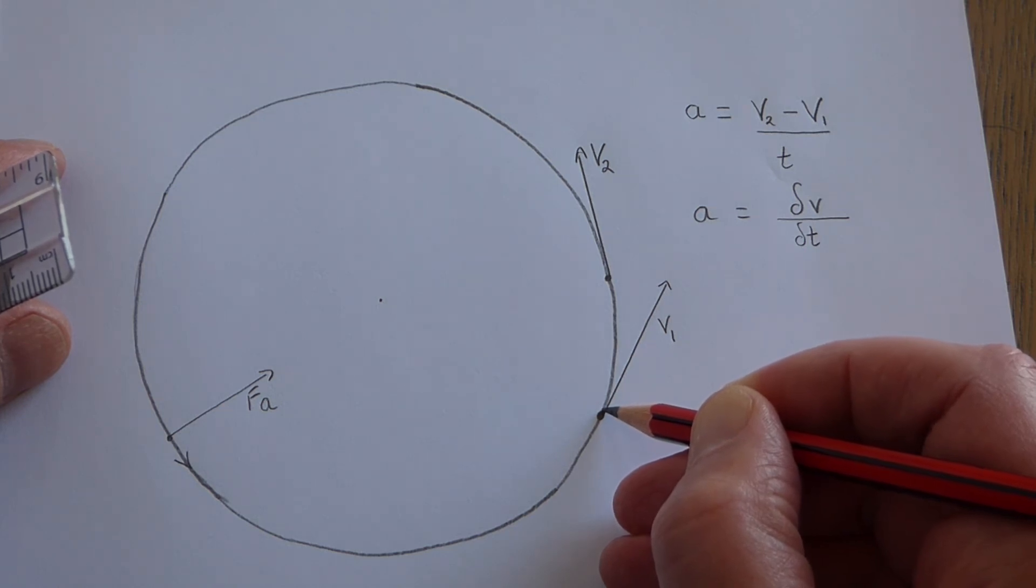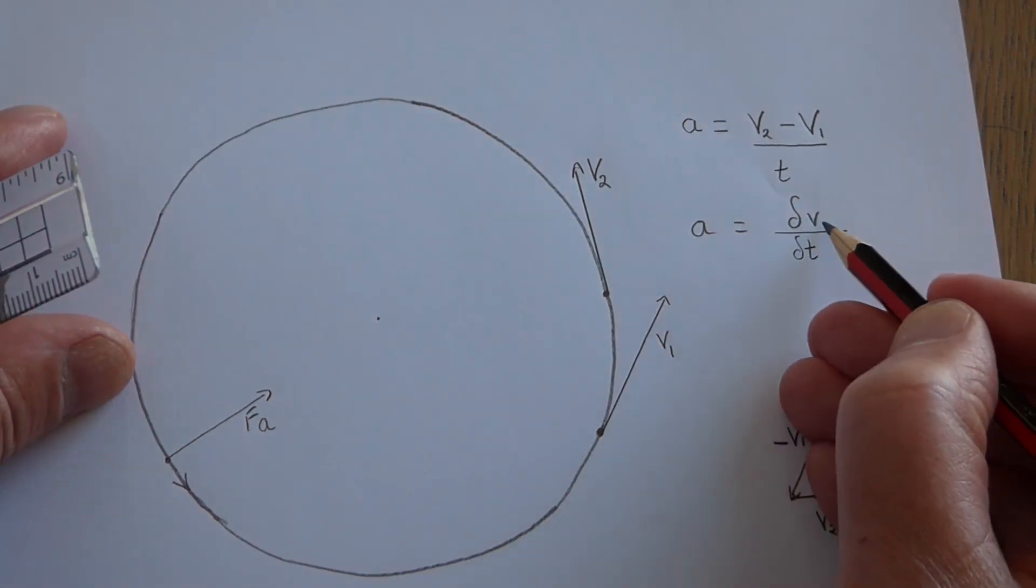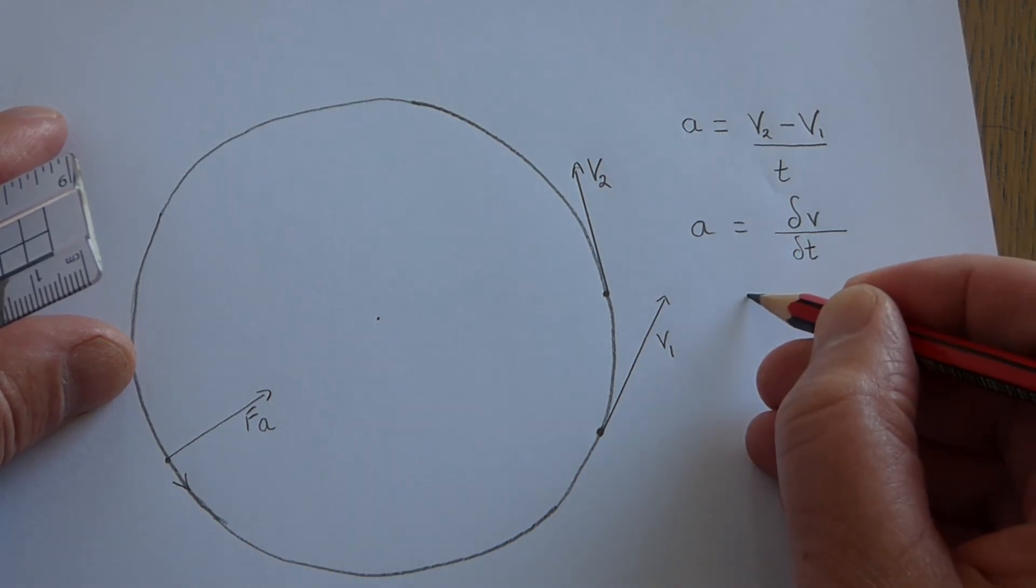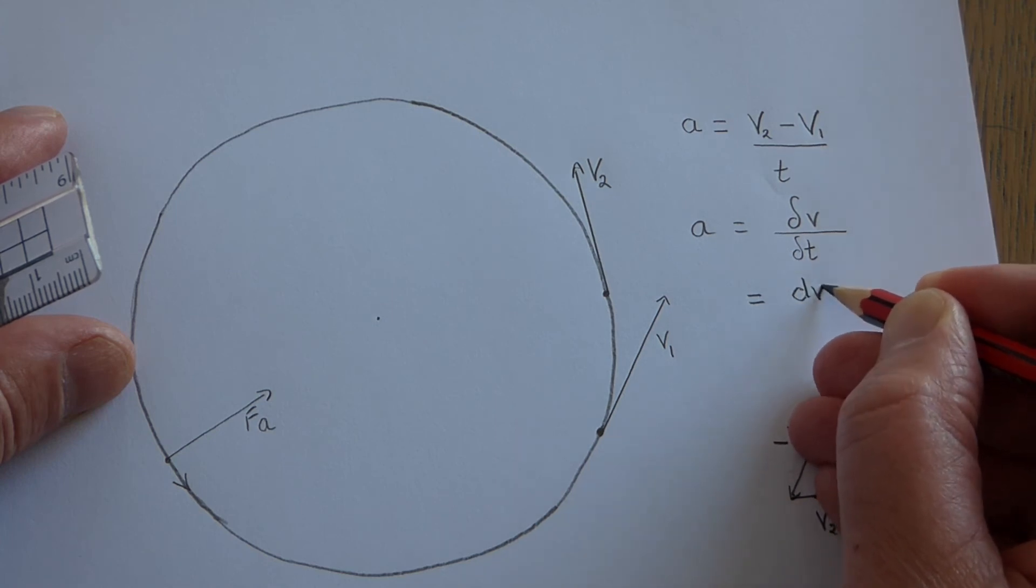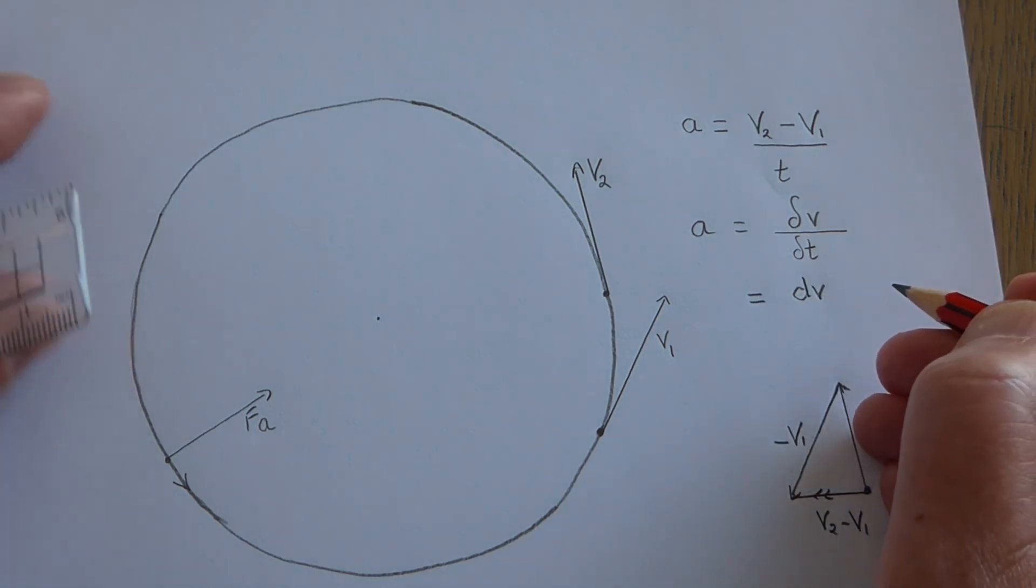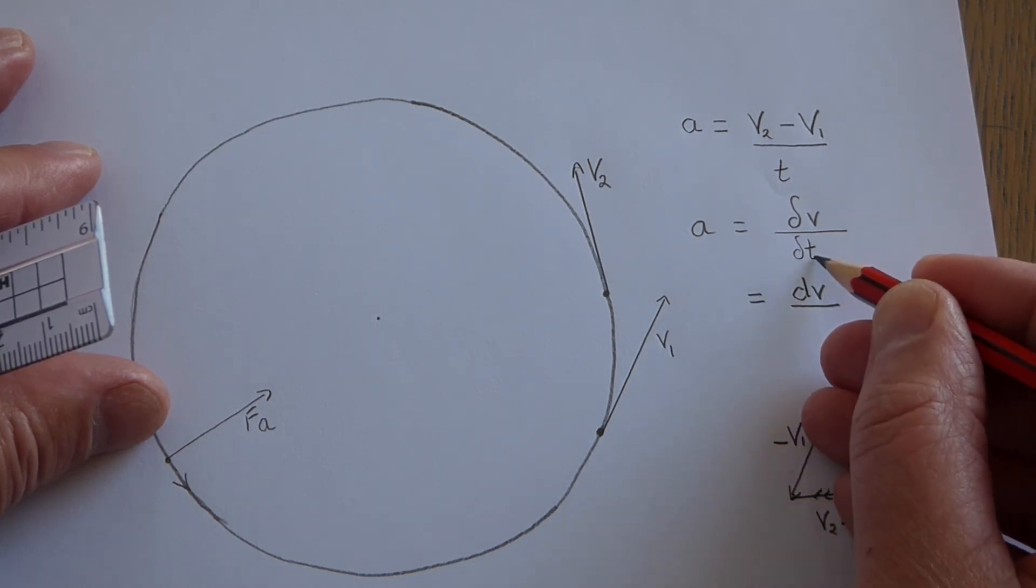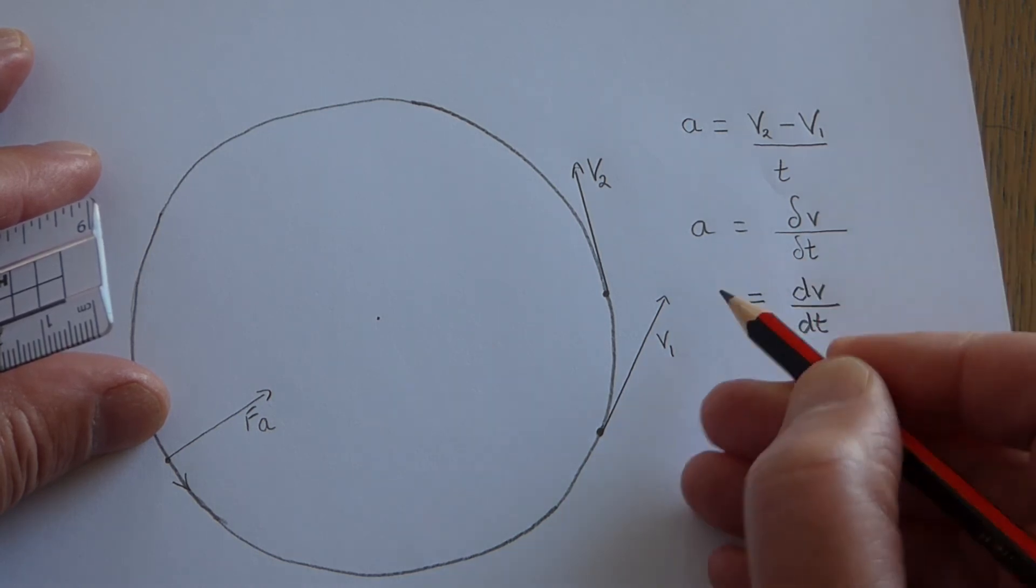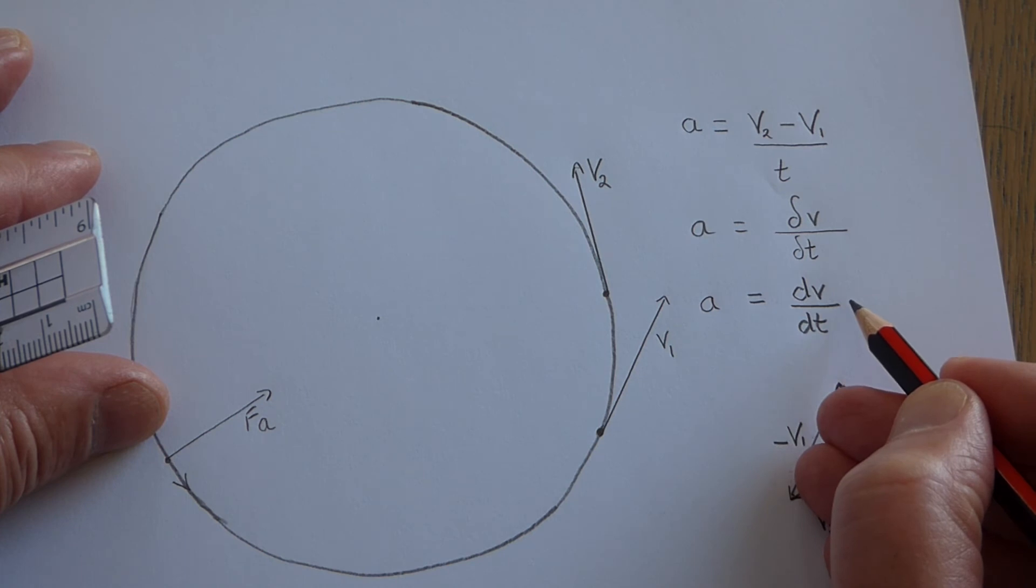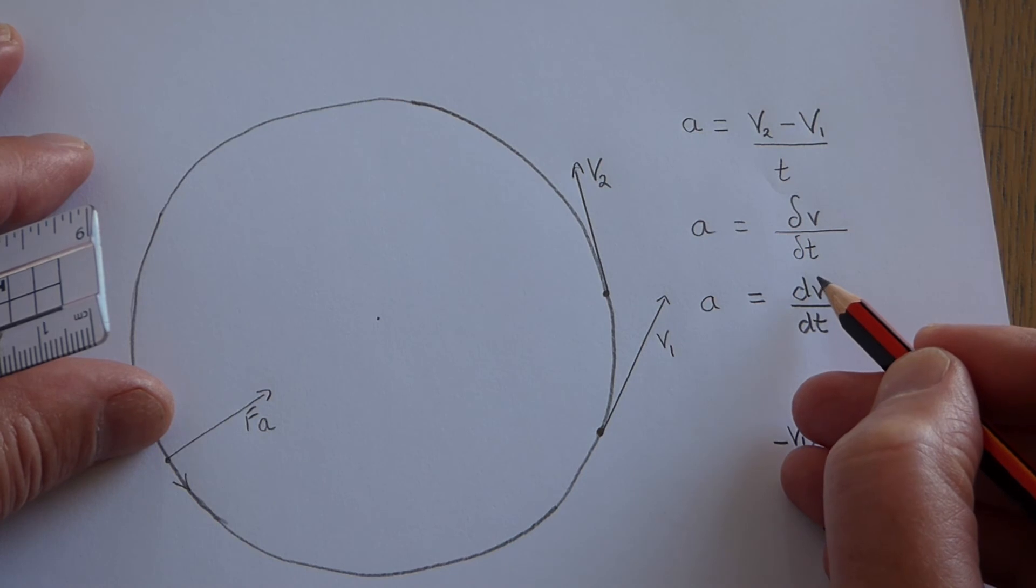In mathematics, if you've got a change in something written as delta v, you really should make that infinitely small, and that becomes dv. The letter d represents something infinitely small, and you divide that by an infinitely small length of time, dt. That's the familiar calculus way of expressing acceleration.